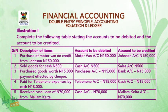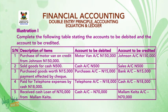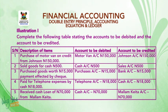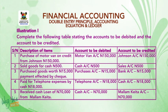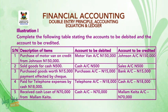Number four, paid for telephone expenses by cash, 18,000. Debit telephone account with 18,000 and credit cash account with 18,000. Number five, receive cash loan of 70,000 from Malam Kayeta. Debit cash account with 70,000 and credit Malam Kayeta account with 70,000.